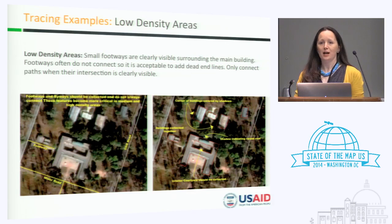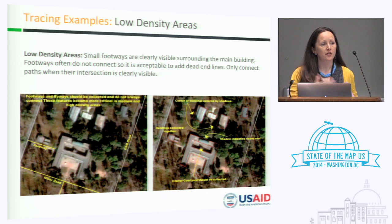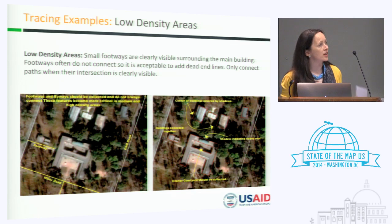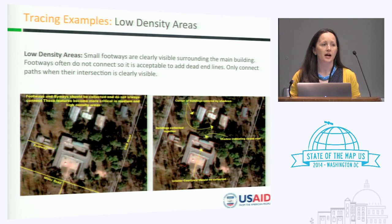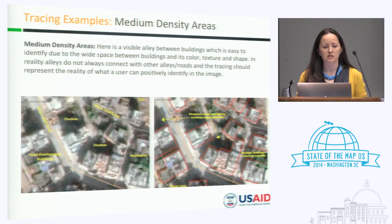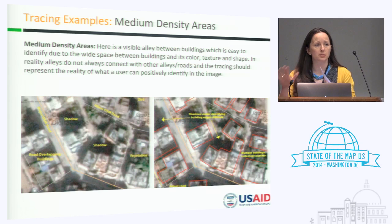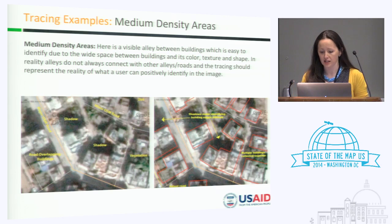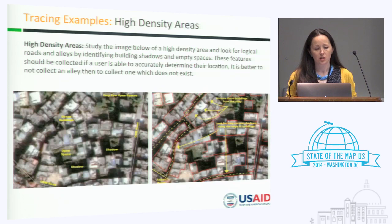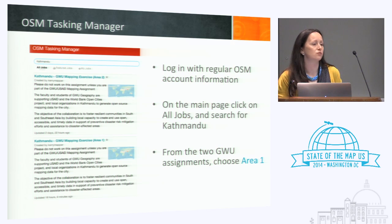Working with partners that help develop really good tracing guides was also critical — helping orient students to the landscape of the area they're working in. Every city or country we've worked in has been a bit different. The GeoCenter put together a great guide last year looking at different building densities within the city, issues with shadows, and protocols for super high-density areas. These materials were made available to students online so they could reference them when working without instructors, and having a partner develop that with us shifted a lot of work off us.